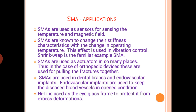Coming to the applications, SMAs are used as sensors for sensing temperature and magnetic fields. They are known to change their stiffness characteristics with changes in operating temperature, which is used in vibrational control — the most common example being shrink wrap. SMAs are used as actuators in many places. In orthopedic devices, they are used for pulling fractures together. SMAs are also used in dental braces and endovascular implants, which are used to keep diseased blood vessels in an open condition.